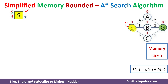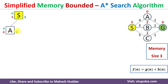I expand the path S to A, storing node A into memory. On the left side I write g(n) = 4 (the actual cost) and h(n) = 0 for node A. Adding these gives f(n) = 4 for node A. There are now two nodes in memory, so there is still one more place available.